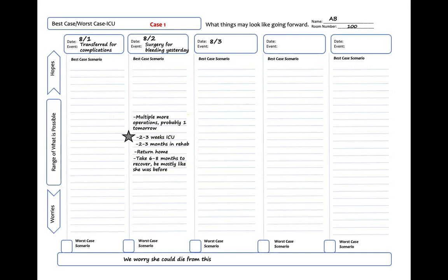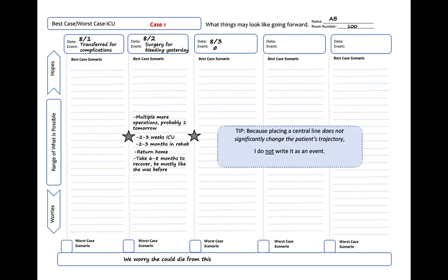The next day on rounds, not a lot has changed overnight. I place a zero or no change as the event. I place the star in roughly the same position as the day prior. You may notice that she got a central line placed, but I don't put it as an event because it doesn't change how we might imagine things eventually playing out. This will also save you time. As a teaching point, because placing a central line does not significantly change the patient's trajectory, I do not write it as an event.